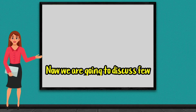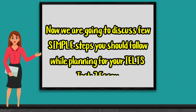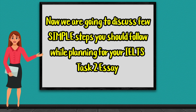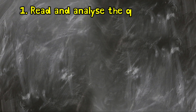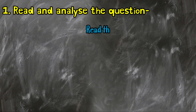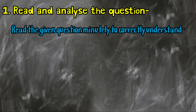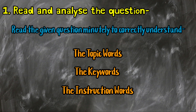Now we are going to discuss a few simple steps you should follow while planning for your IELTS writing task 2 essay. Number 1: Read and analyze the question. Read the given question minutely to correctly understand the topic words, keywords, and instruction words.